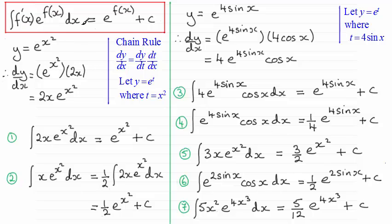We don't do it by integration by parts — it is this particular form, and it's a special one. Always get in the habit of checking that out before you rush into your integral. Check whether you've got a differential of f of x being multiplied with e to the f of x. If you've got a constant in front you'll need to make an adjustment, as we did in these last three examples and in examples 2 and 4.